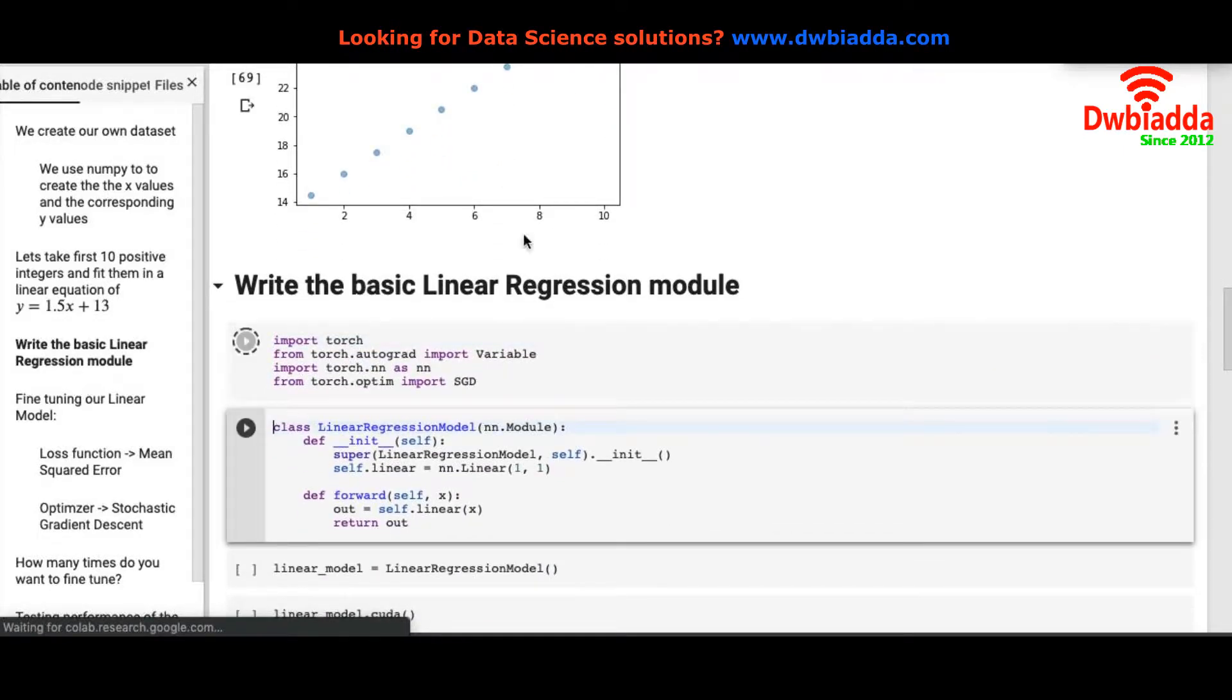To do that we will import Torch. From Torch.autograd we will import variable. We shall also import Torch.nn that has all the modules for implementing deep neural networks, and for optimization we are importing SGD from Torch.optim.